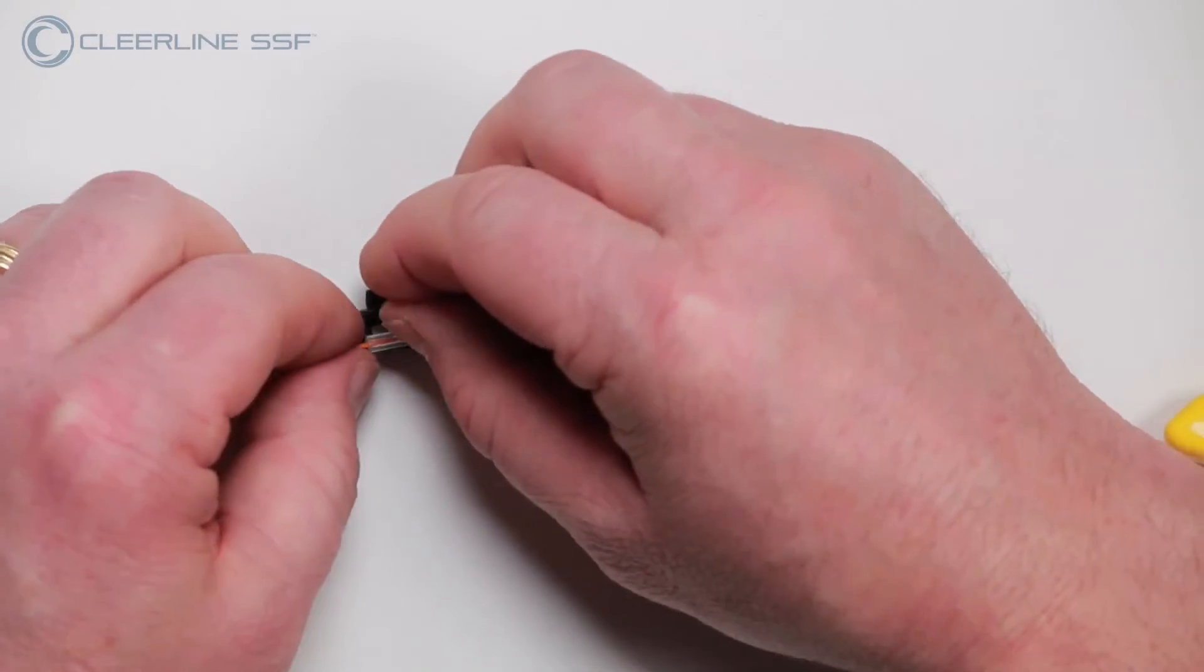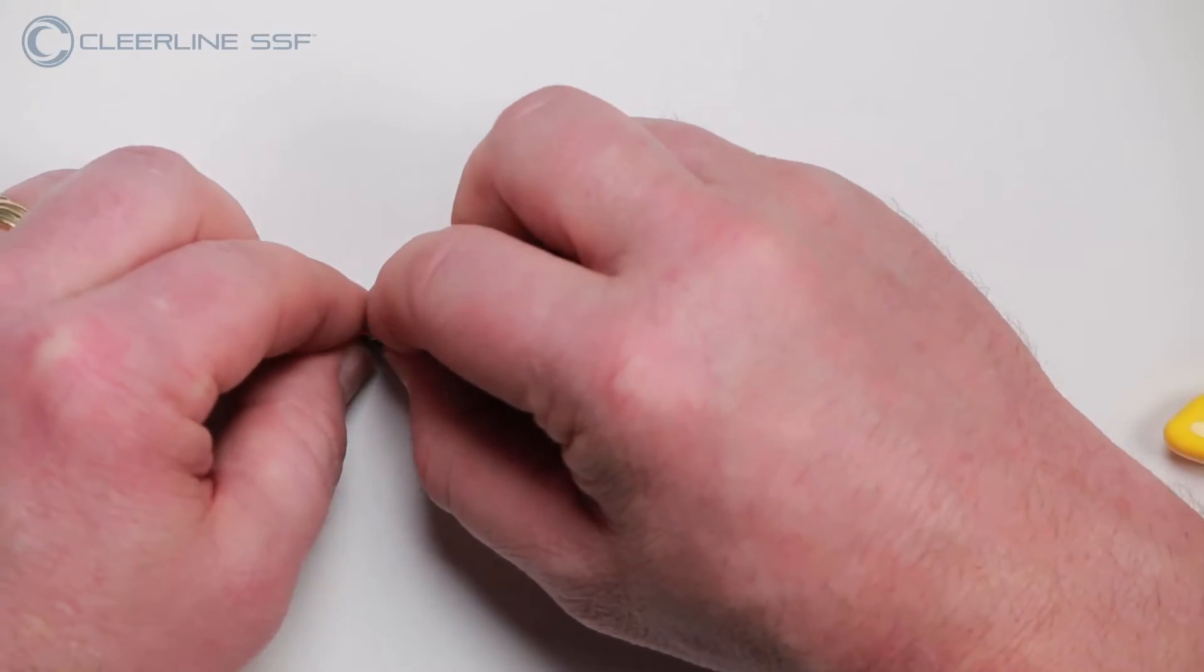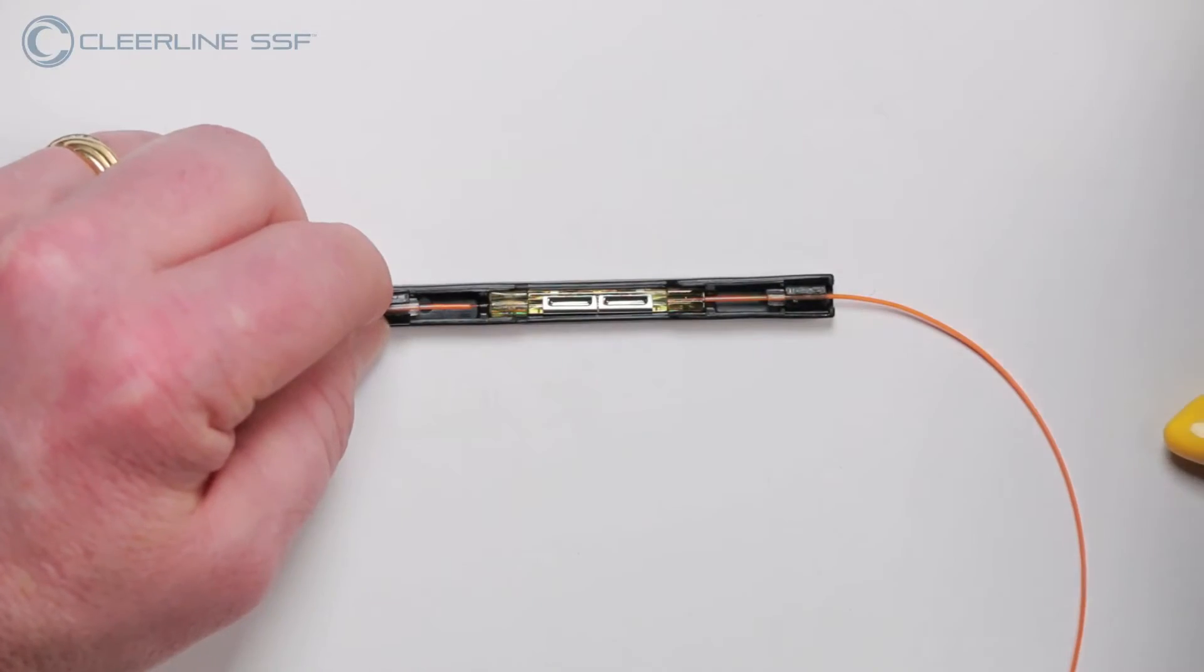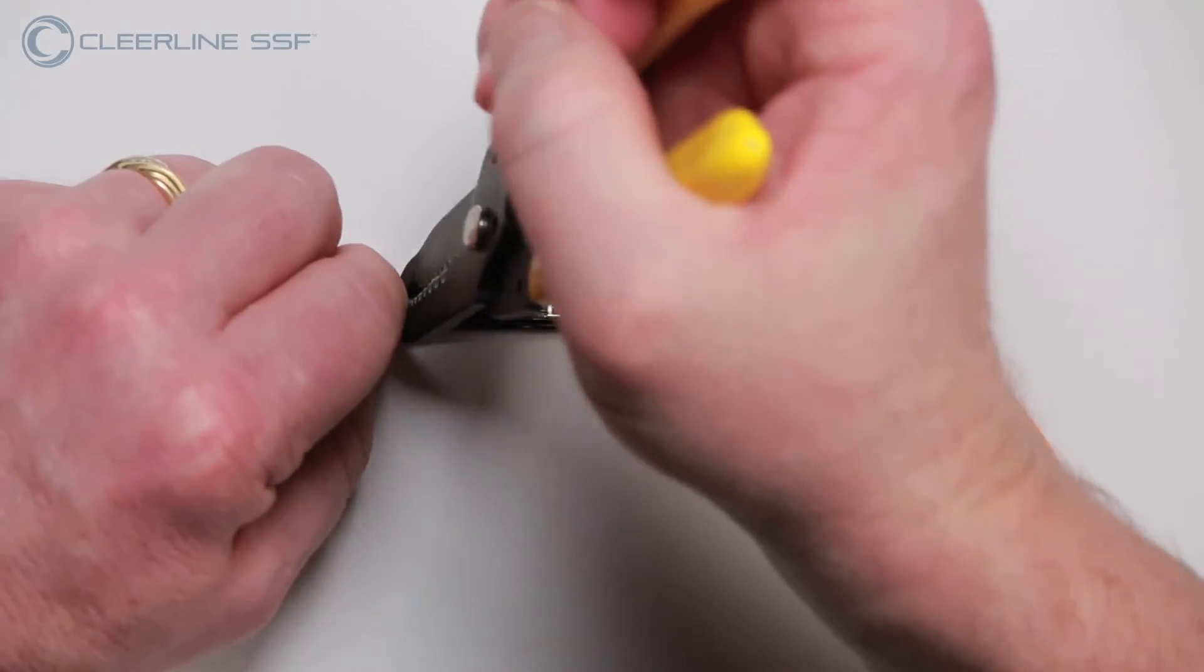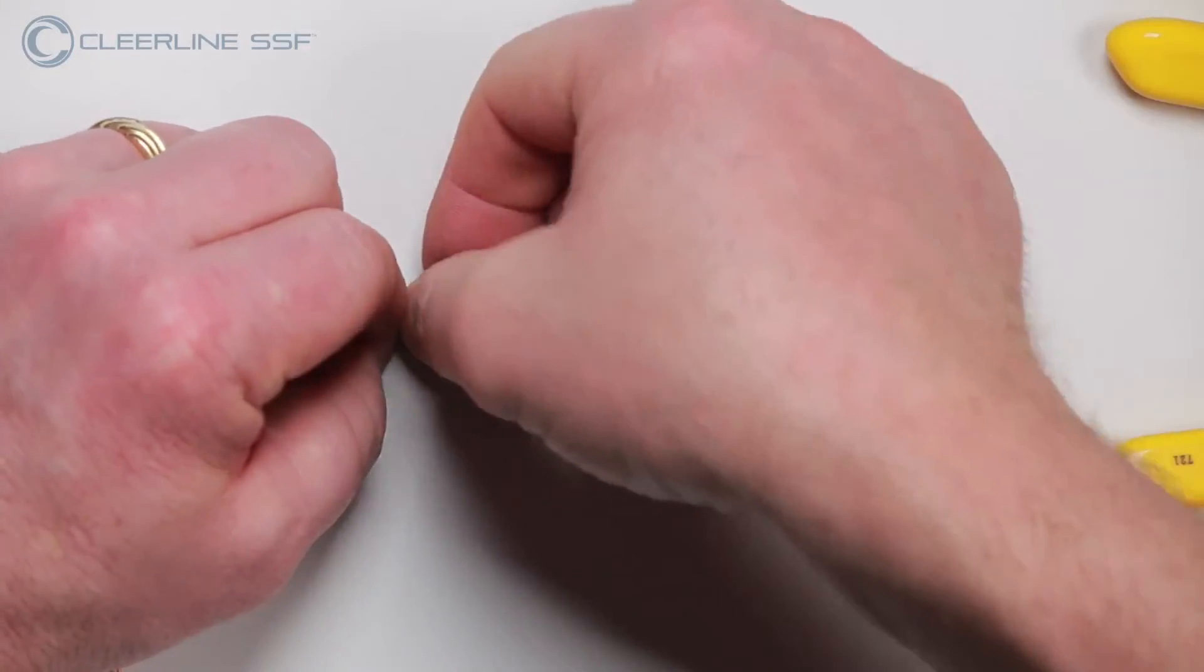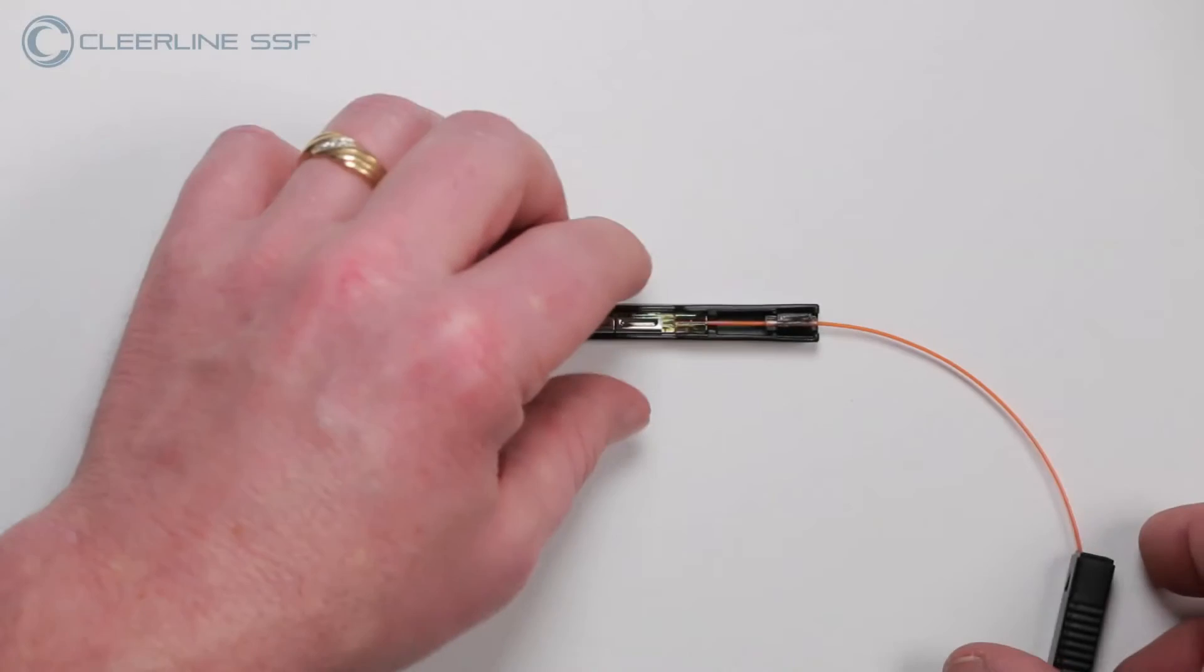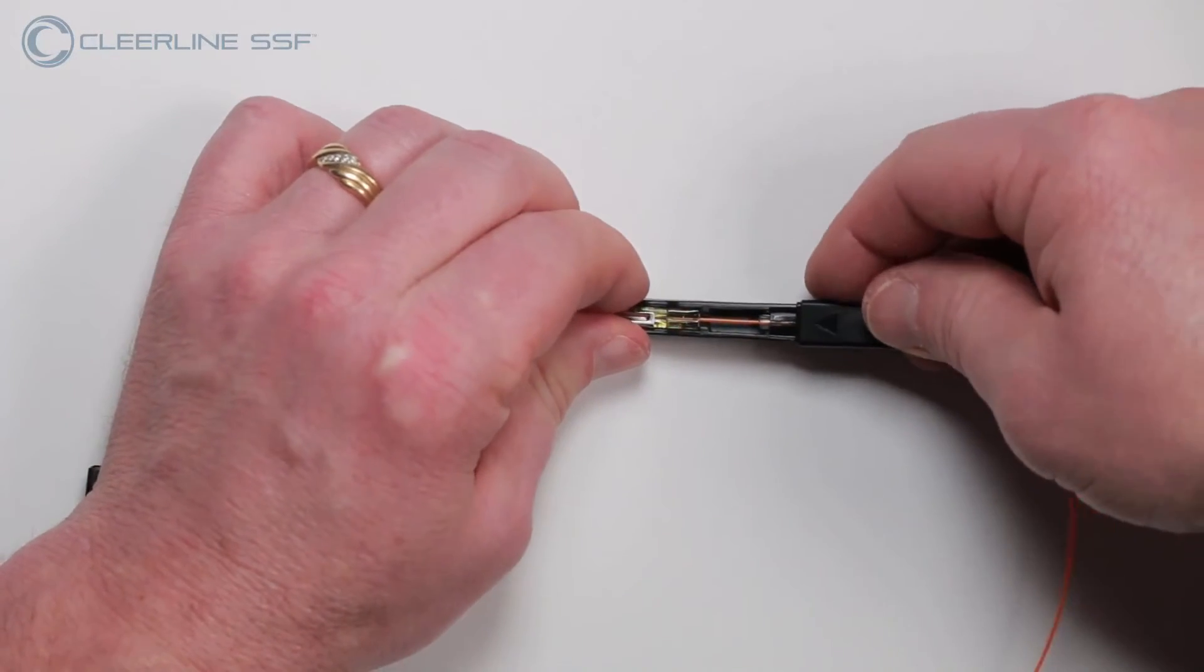Repeat the same steps for the left side of the splice. Slide left and right splice covers, arrows positioned up, towards center to complete.